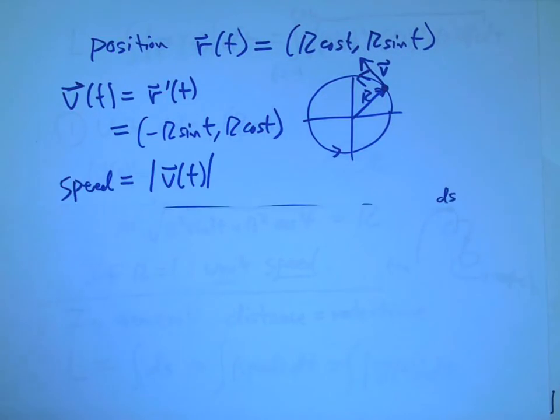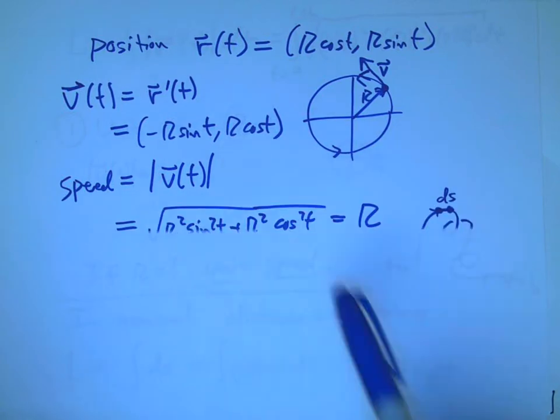The speed is just the magnitude of that vector. Because of the wonderfulness of sine and cosine, that works out to be exactly r.